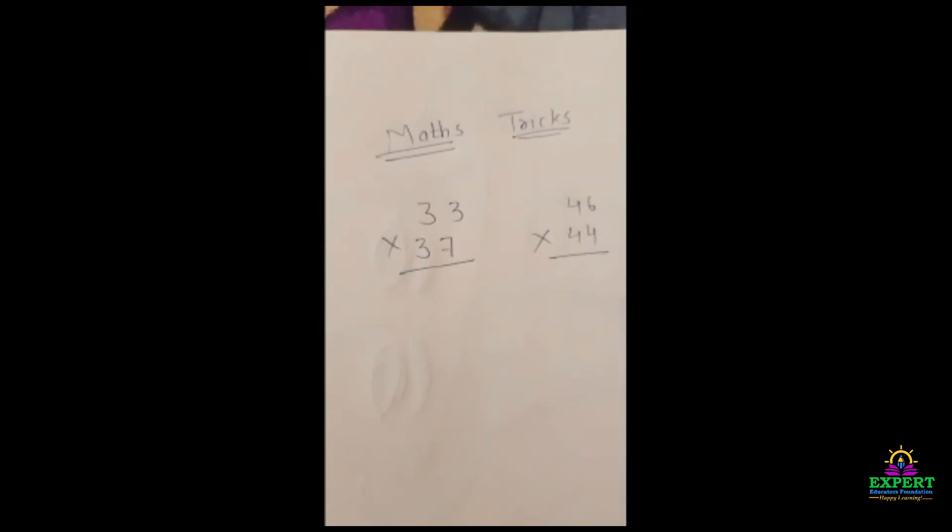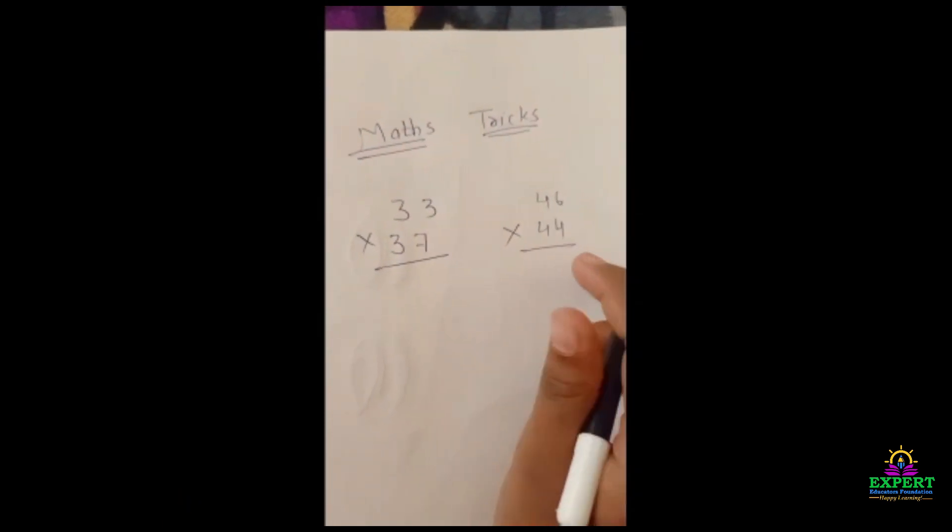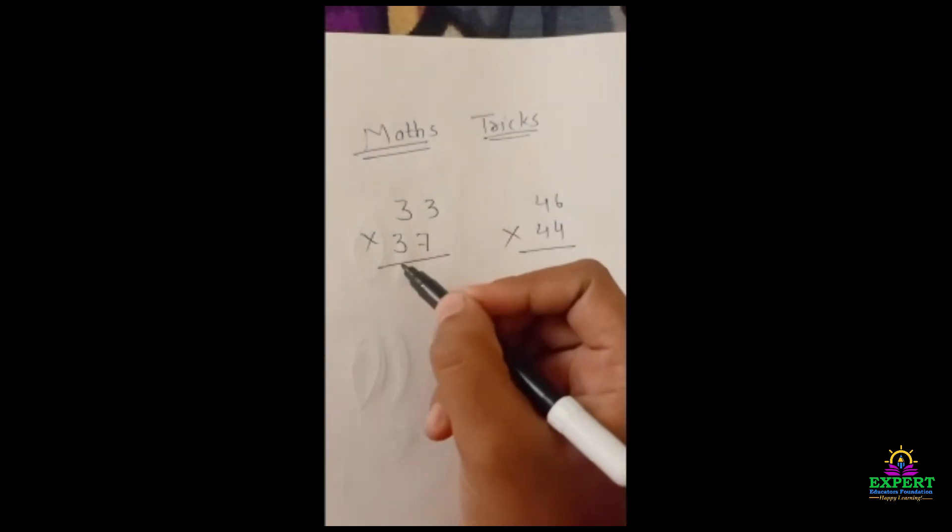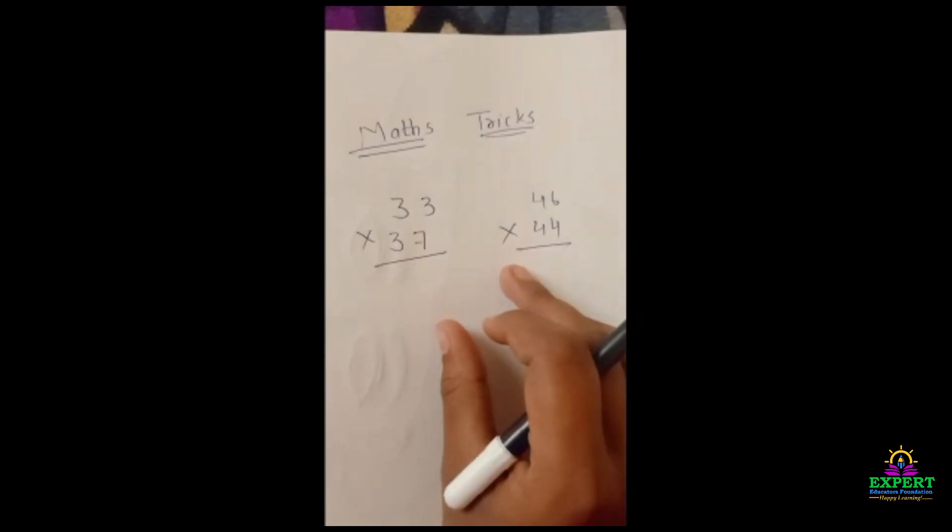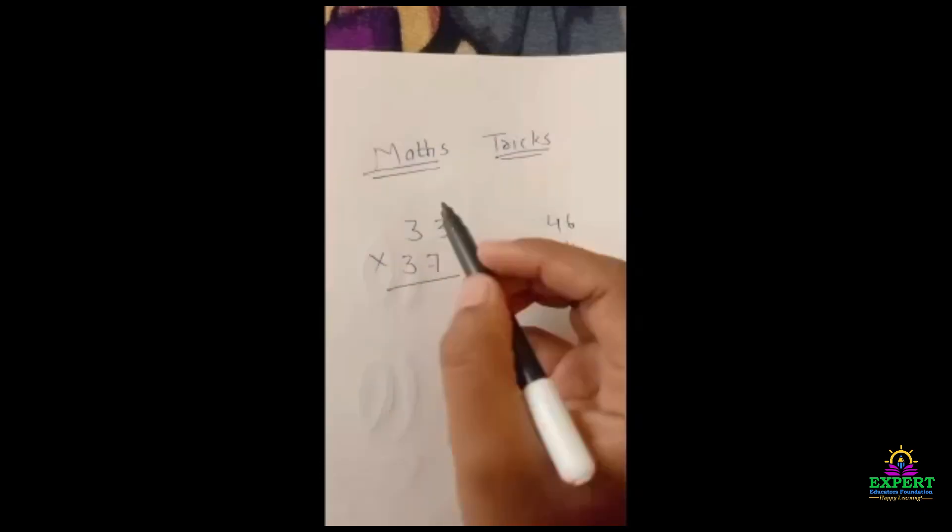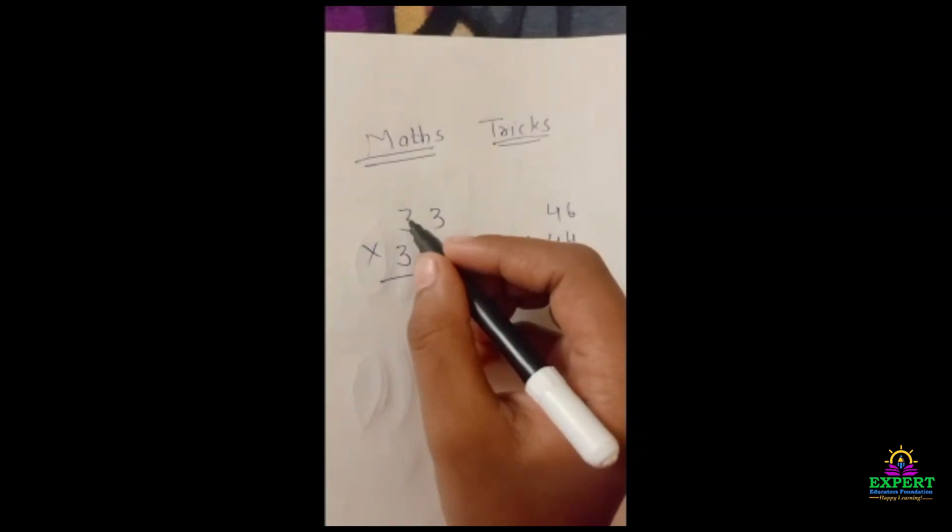So let's see what is this. Let's see our math tricks one by one. First, here is to multiply this number. Now I am going to share with you all a very simple method. See, both numbers are the same.